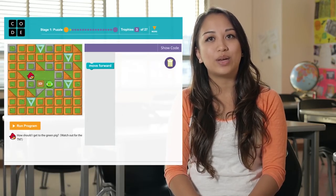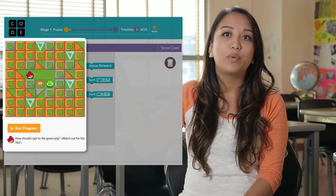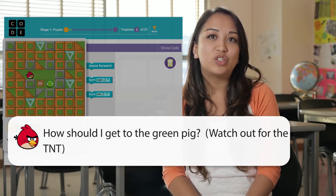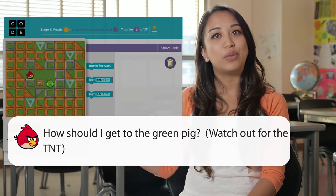Blockly is split into three main parts. On the left is the bird's maze, where your program will run. The instructions for each level are written below the maze.